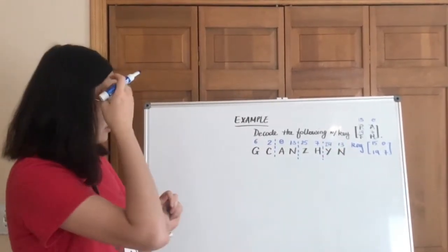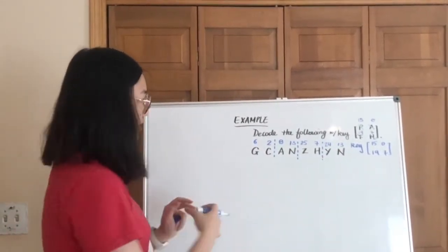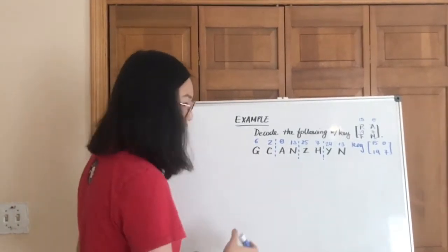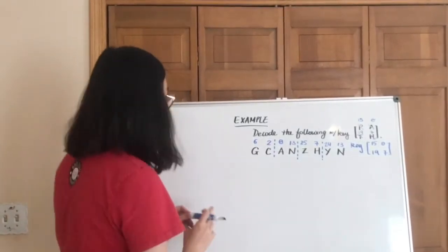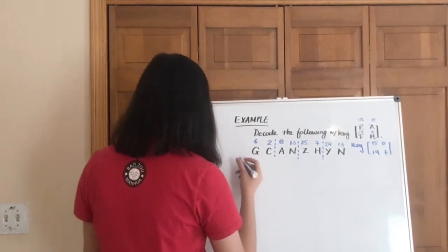Cool. Now see, we have the key now. We are going to have to find the inverse before we can do anything. So let's find the inverse of the key.